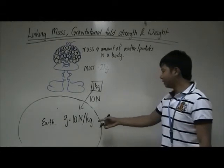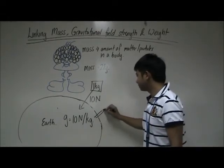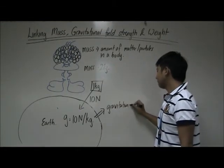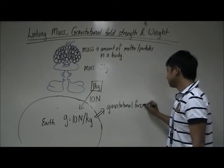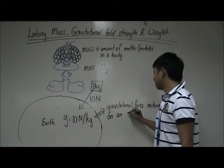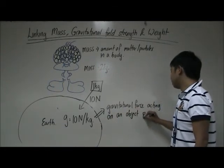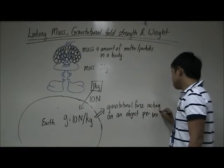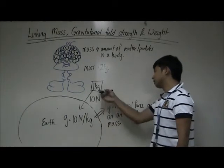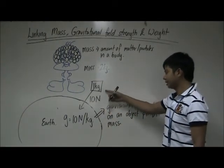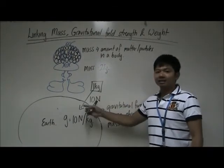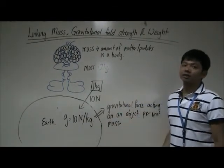In short, we can define gravitational field strength as the gravitational force acting on an object of unit mass. It means that for 1 kg object, how much force does the planet exert on it? This is actually the gravitational field strength.